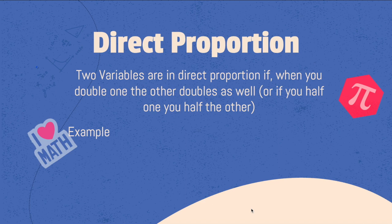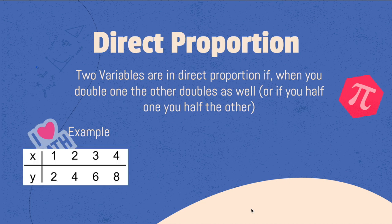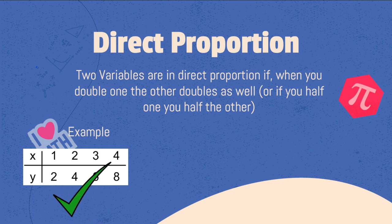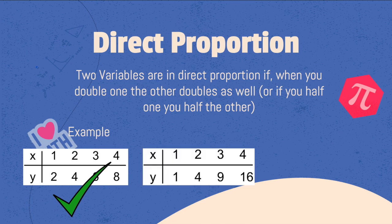Let's take a look at some tables with variables and see if we can work out if these are in direct proportion. Here we have x is 1, y is 2; x is 2, y is 4; x is 3, y is 6. We can see that if we times 1 by 2 we get 2, times 2 by 2 we get 4, times 1 by 3 we get 3, times 2 by 3 we get 6. So these two variables are in direct proportion.